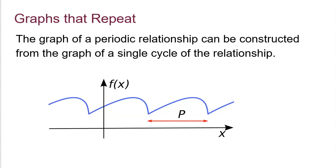The graph of a periodic relationship can be constructed from the graph of a single cycle of the relationship, repeated. In this picture, you can identify the repeated section — here's the beginning, and here's where it ends. After that, it just repeats itself again and again. The x-axis continues to go on, so we see this section that's repeating itself.